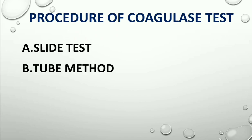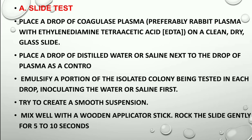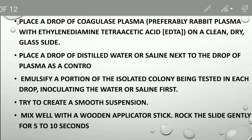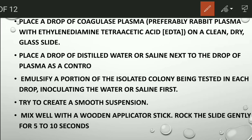There are two ways to determine the coagulase test: the slide test and the tube test. For the slide test, first place a drop of coagulase plasma — we normally use rabbit plasma — on a clean and dry glass slide. On a separate slide, place a drop of distilled water or saline as a control.